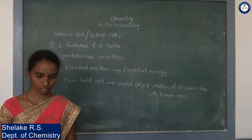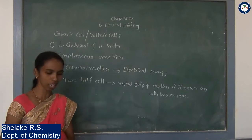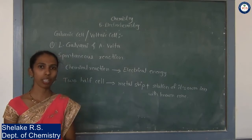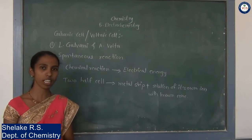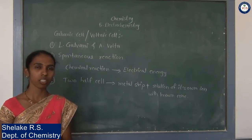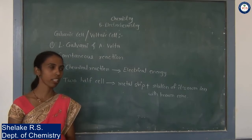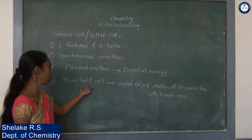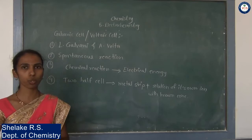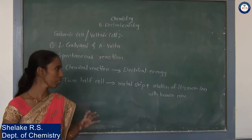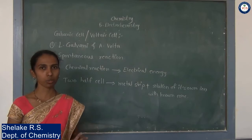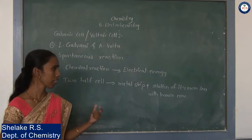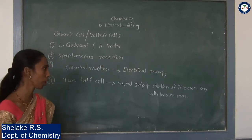These two metal plates are called electrodes, and they are connected with each other by a voltmeter for passing electricity, or you can say for passing electrons. These two electrodes are joined together by an electric wire. To complete the circuit, these two half-cells — the containers holding the electrolytic solution — are connected with each other.